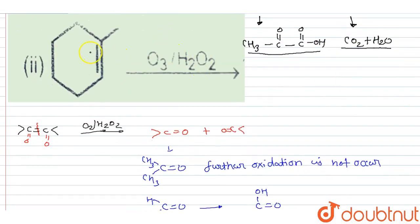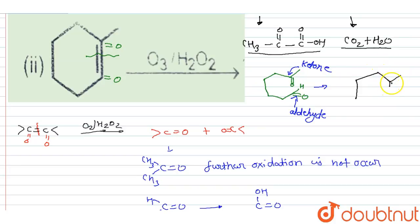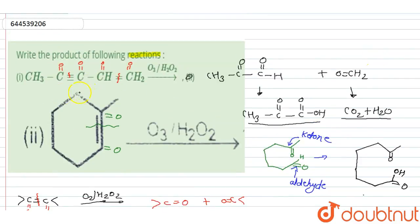For Reaction 2 — the cyclic alkyne — this double bond is broken. A C=O is formed on one carbon and a C=O is formed on the other carbon, giving a dialdehyde/diketone structure. We identify that one part is a ketone and the other is an aldehyde. The aldehyde goes into further oxidation and the ketone does not. So the final product is the ketone remaining the same, and the aldehyde portion going into further oxidation to form a carboxylic acid. These are the two products of the two reactions.